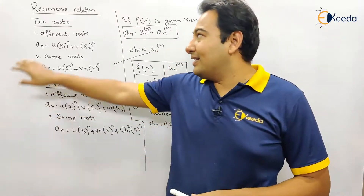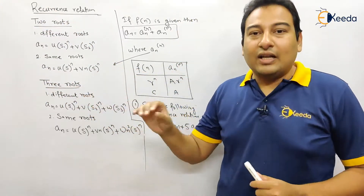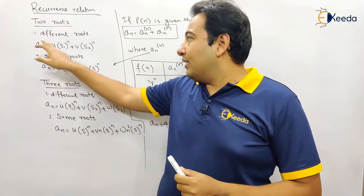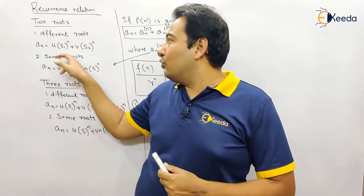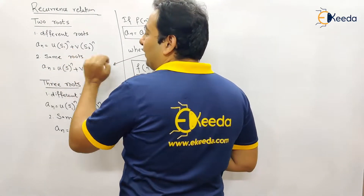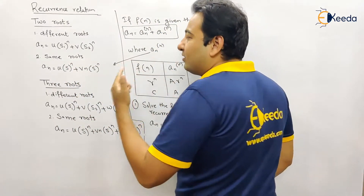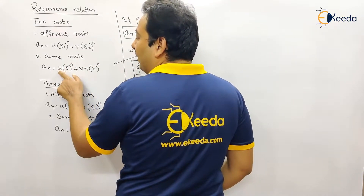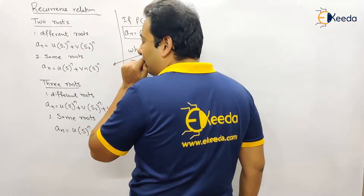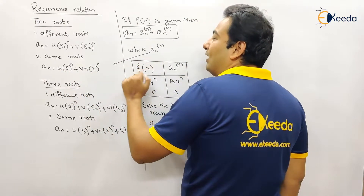For solving a recurrence relation, there are two possibilities: you can get two roots or three roots. For two roots, the roots may be same or different. If the roots are different, the solution is a_n = u·s1^n + v·s2^n. If the roots are the same (only one distinct root), the solution is a_n = u·s^n + v·n·s^n, where the powers of n are n^0 and n^1 respectively.